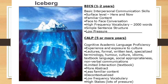When talking about academics, we need to look at CALP — Cognitive Academic Language Proficiency. It involves experience and exposure to culture, lectures, formal written tests, specialized terminology, humor, idioms, textbook language, social appropriateness, and nonverbal communications. It involves information found in textbooks with limited interaction.